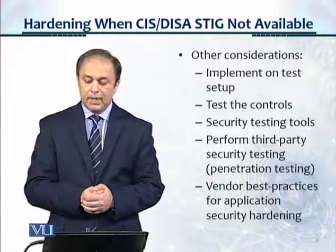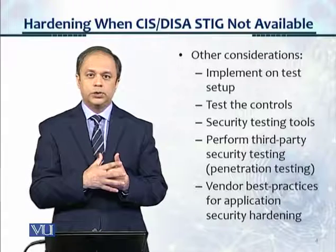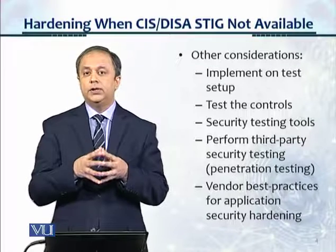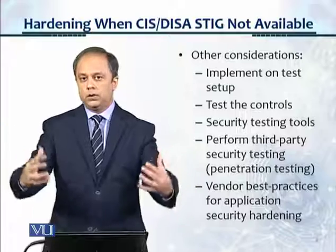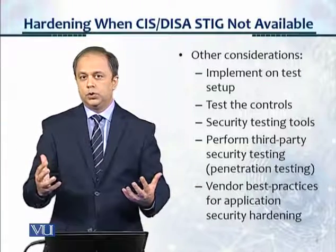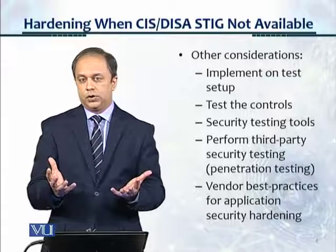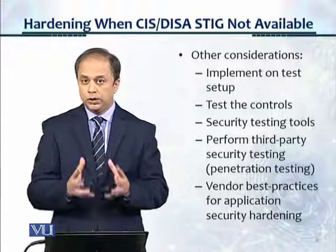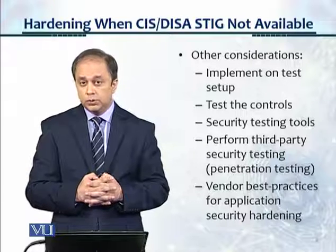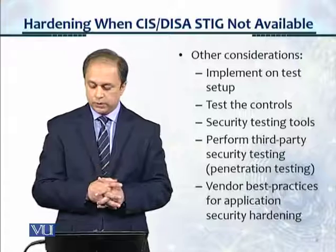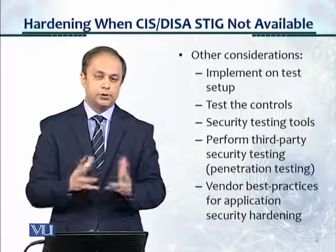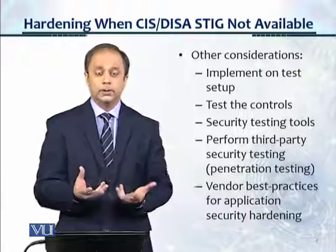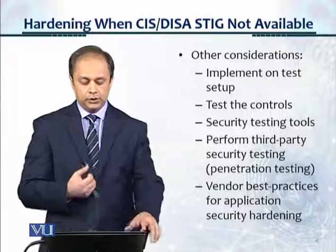Follow the same process: step two, do the research; step three, make the checklist. Eventually you implement this on a test setup, and here the risk is slightly higher because you haven't followed a conventional DISA or CIS STIG approach — you've researched and made your own custom controls. So in testing, be more careful in the pilot configuration. Use security testing tools — many open source tools are available. Perform third-party security testing like penetration testing from a certified ethical hacker. Vendor best practices for application security hardening are also sometimes available, with vendors providing their own guidelines.